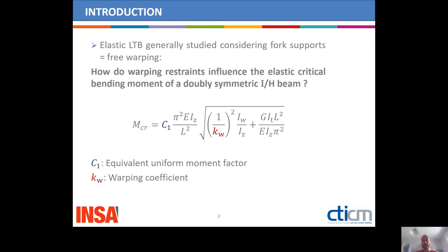Elastic lateral torsional buckling is generally investigated considering fork supports at both ends, which means free warping. We are here to investigate the influence of warping restraints on the elastic critical bending moment of a doubly symmetric A or H beam. In the common case, the critical bending moment can be evaluated using this expression if the bending moment distribution is linear. There are two parameters, C1 and KW — the equivalent uniform moment factor and the warping coefficient — both of which depend on the stiffness of the warping restraint.